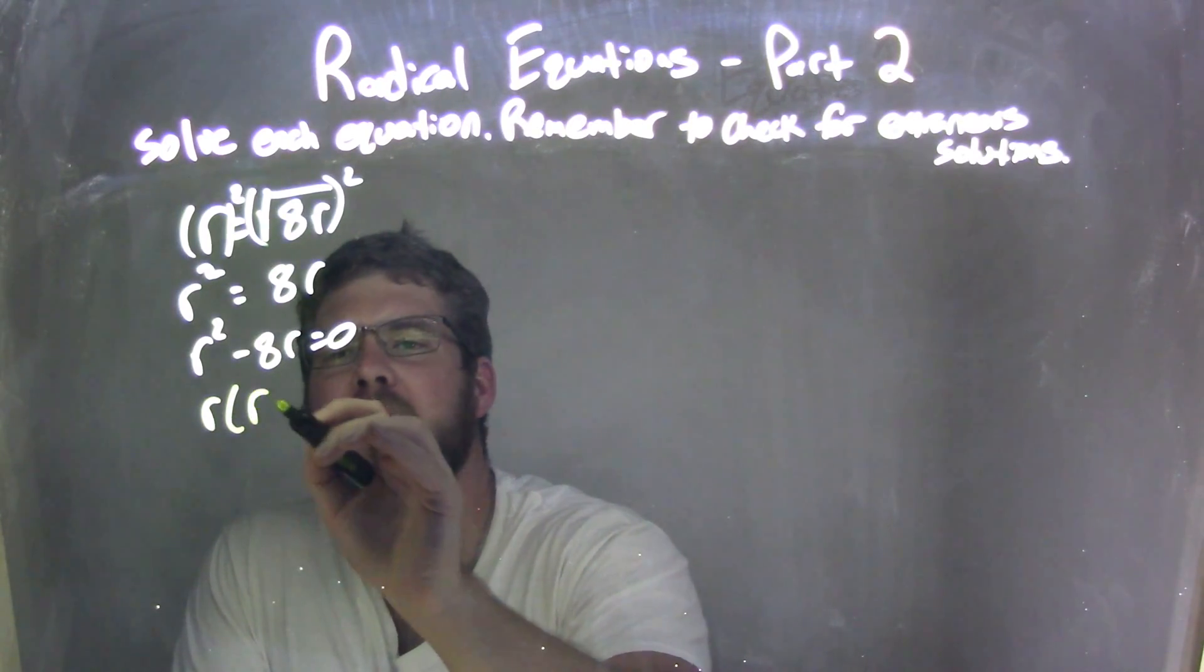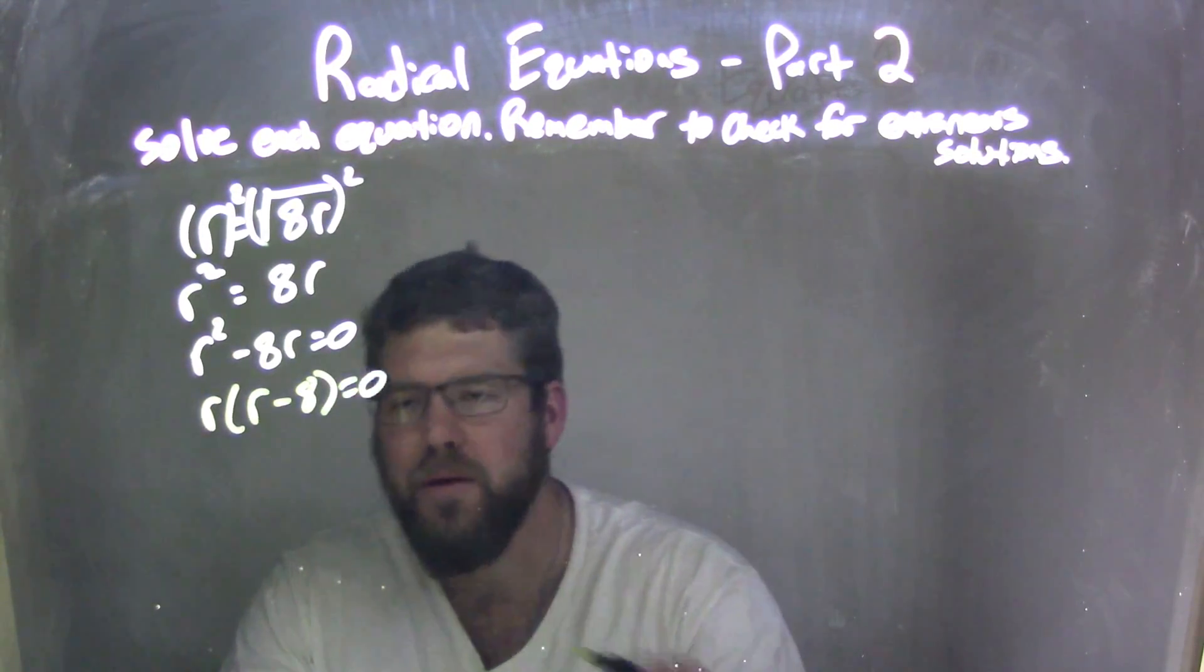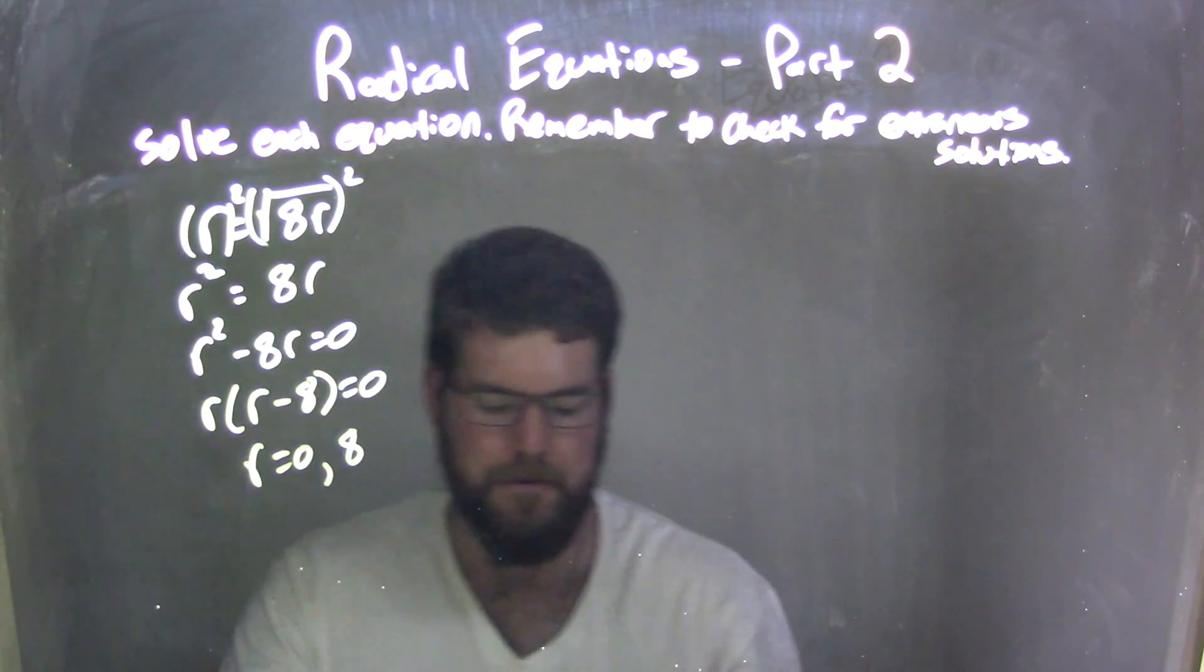Factor that out. Pull out an r. r times r minus 8 equals 0. Set both of them equal to 0 and get r equals 0 and positive 8.